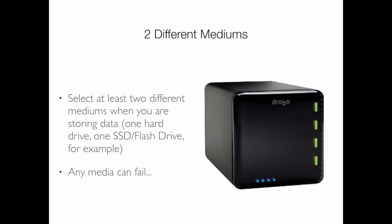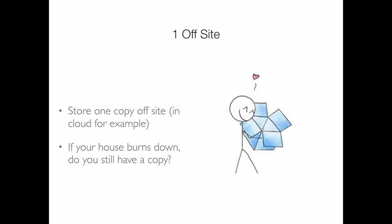One copy of that file should not be with you personally — it should be offsite, away, gone. That's what we want: three copies, two media, one not with you. The idea is that the offsite copy isn't susceptible to whatever you're going through. It's safe somewhere else in a server farm, up in the cloud.